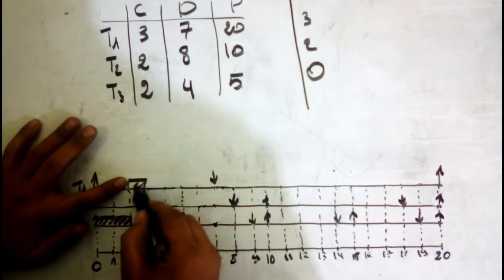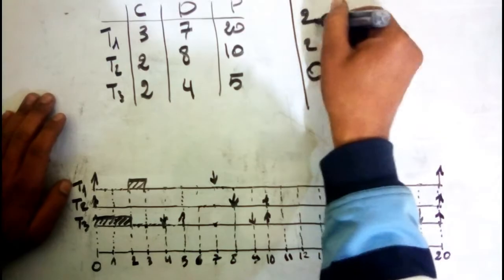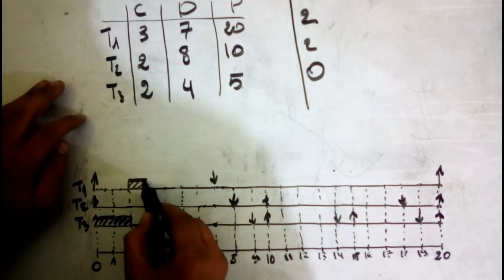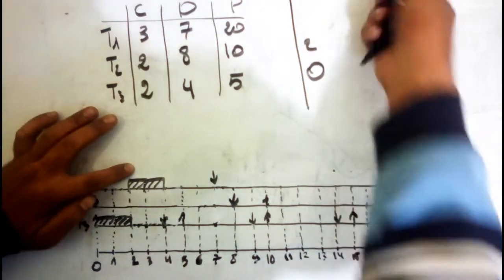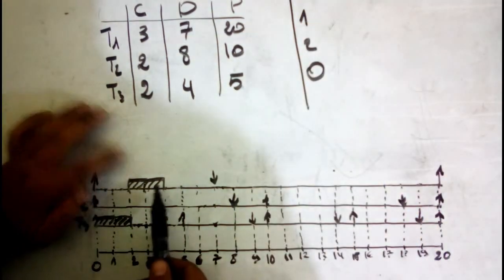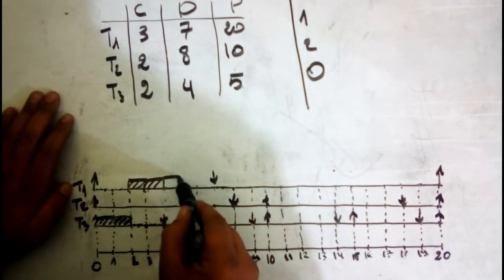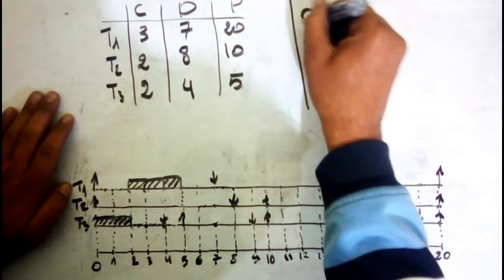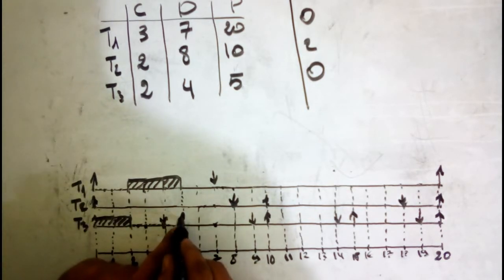T1 runs one unit of time and it remains 2. Then comparing deadlines, we run T1 again — it remains 1. Now T1's remaining capacity hits 0. At time unit 5, a new period starts for T3, marked with a top arrow. We re-initialize T3's capacity for the new period.